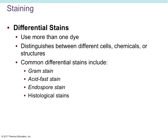Differential staining is where we use more than one dye. The word 'differential' contains 'different' — you want to detect differences between the cells stained on your slide, distinguishing between different cells, chemicals, or structures. Common types of differential staining are gram staining (which we'll do in class), endospore staining, acid-fast staining, and histological stains. Histological stains enhance different structures and are more commonly used in anatomy and physiology.